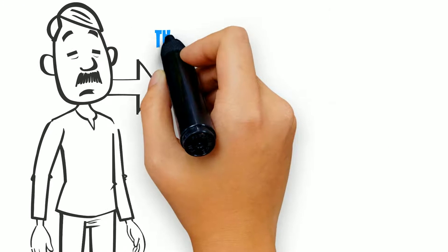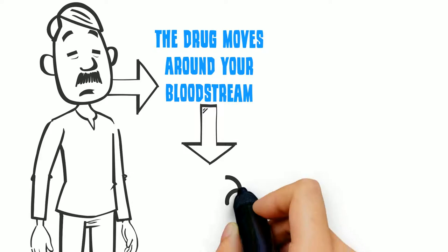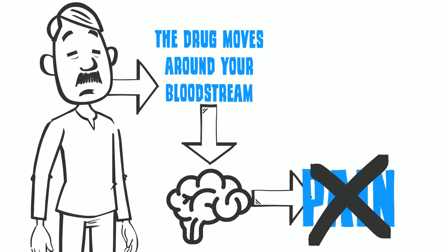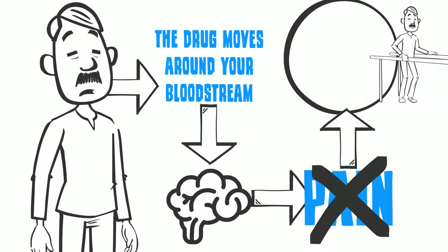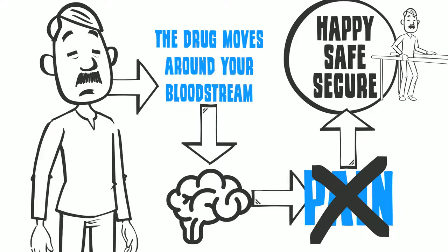When you take a pain pill, the drug moves around your bloodstream, makes its way to the brain, and blocks the feeling of pain. It also produces a state of feeling happy, safe, and secure by causing the release of positive neurotransmitters.